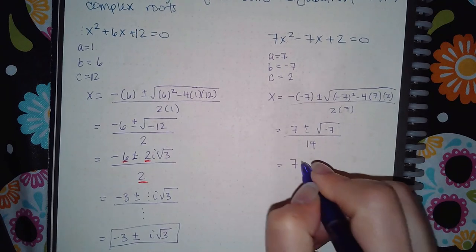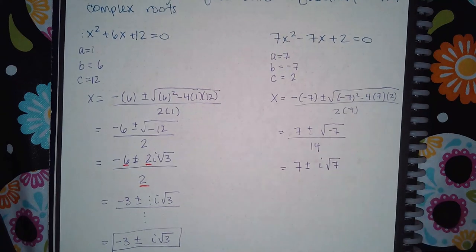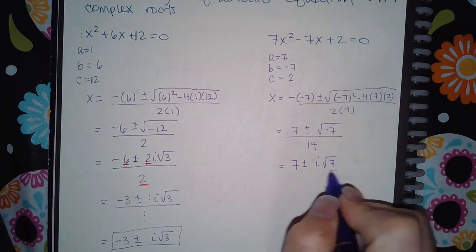Now the negative will come out as an i, but the square root of 7 does not simplify. So this will just stay the square root of 7, and then you have over 14.